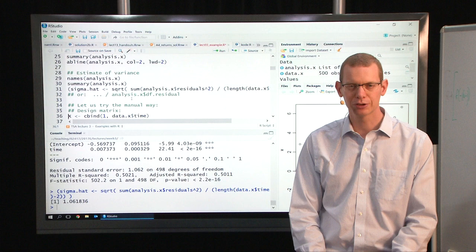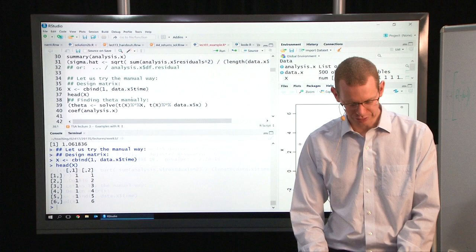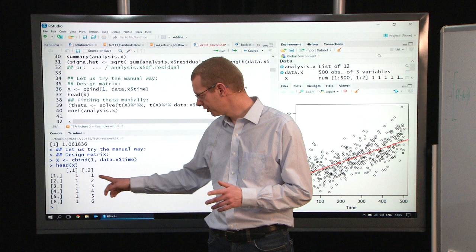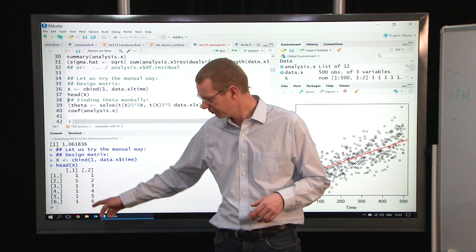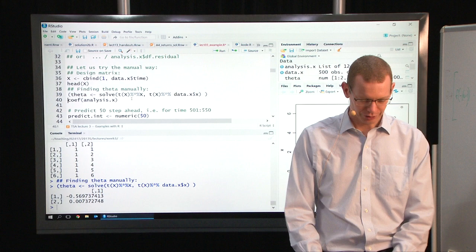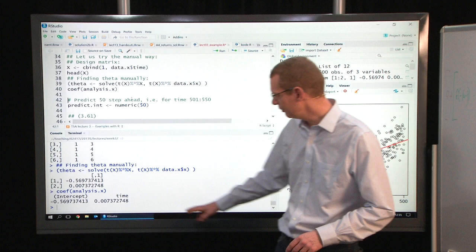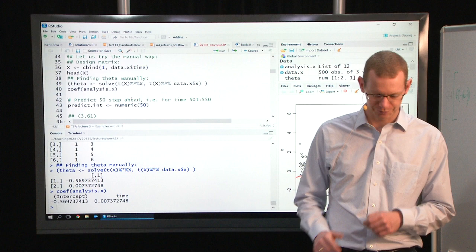This is done using the lm function, but we can also do this in a manual way. Let's create the design matrix. I'm not doing the trend model now, I'm just doing the regular, where everything is relative to the original point in time. Just showing you the first six rows here. We solve this, we get the same estimated parameters as we were doing before.